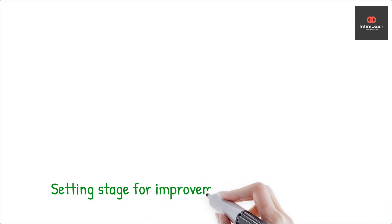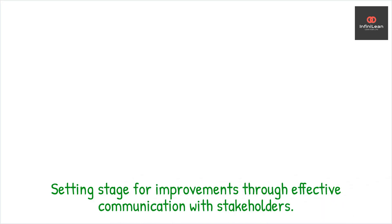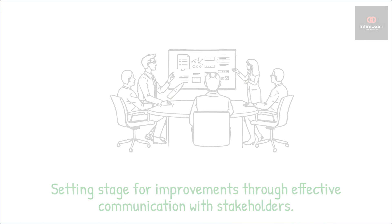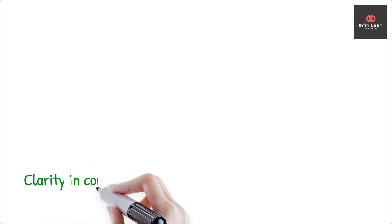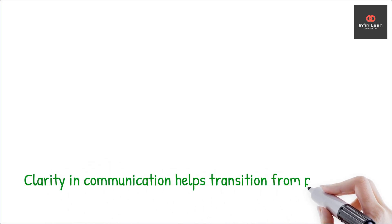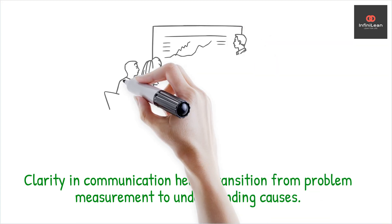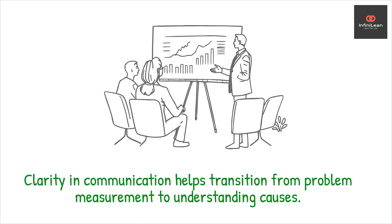By doing so, the Analyze Phase sets the stage for targeted improvements. Communication is key throughout this process — findings are shared with all stakeholders to ensure everyone is aligned and understands the insights gathered. Clarity in communication aids in garnering support for the subsequent improvement phase. The Analyze Phase is about uncovering the truth hidden in data, transitioning from measuring the problem to understanding its cause. Our findings here are essential for crafting impactful improvement strategies.